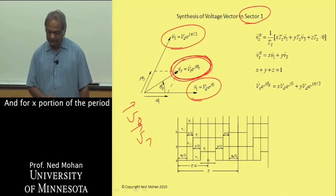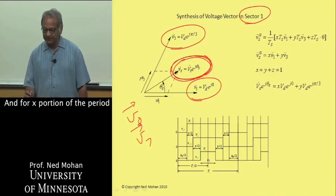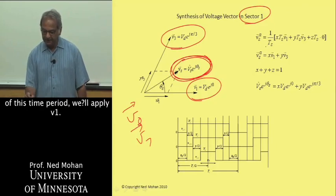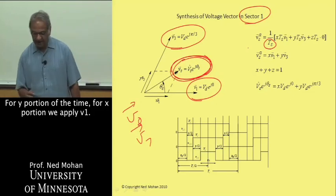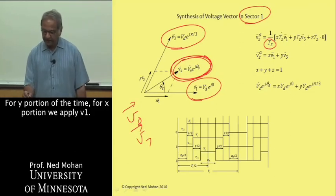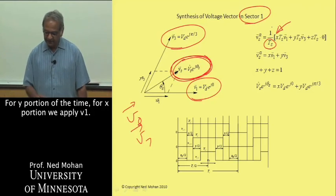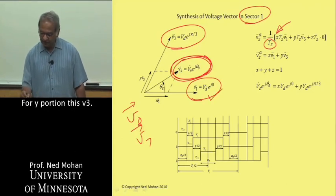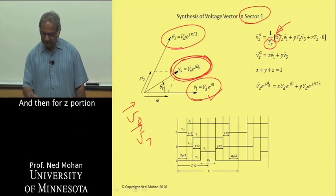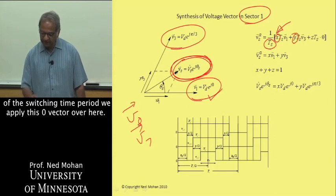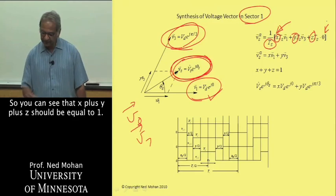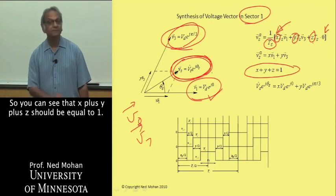We will synthesize this by time-weighted averaging. Let's say that we are switching with a time period of T sub S. We will divide whatever we get by this time period to get the average. For X portion of the time we will apply V1, for Y portion we apply V3, and then for Z portion of the time we apply this zero vector. You can see that X plus Y plus Z should be equal to 1 because that makes up the whole time period.